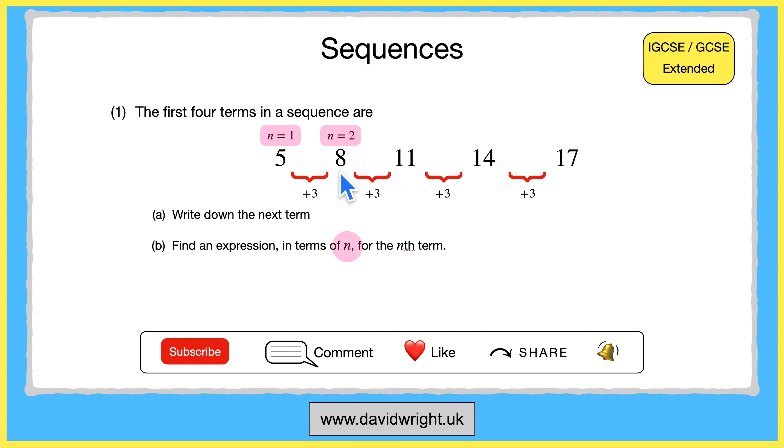When n is 2 we get 8 and we get 11 when n is 3 and so on. So the nth term in the sequence is a way of describing the position of a number in the sequence where n can be any positive integer.